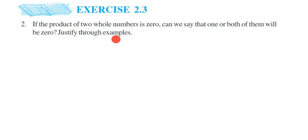Justify means we have to take an example and show that yes, it is true or it is false according to the statement given. So what is the statement? If the product of two whole numbers is zero — meaning when you multiply two whole numbers and your answer is zero — then we say that one or both of the numbers are zero, and we have to give an example.